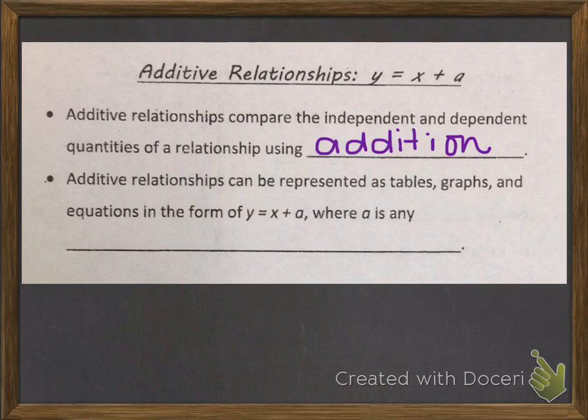Additive relationships can be represented as tables, graphs, and equations in the form of y equals x plus a, where a is any rational number.